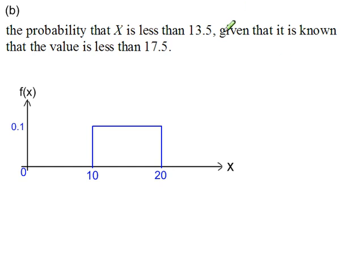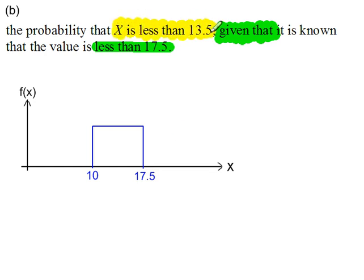Part B, another restriction. It says given that, and it says the value is less than 17.5. So I'm going to restrict this graph to values of x less than 17.5. The probability that x is less than 13.5. That's the region we need to shade.